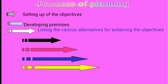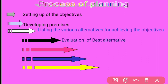After listing the various alternatives, the planning manager starts the fourth step: evaluation of the best alternatives. In this step, the planning manager evaluates the list of alternatives prepared in the third step to find out which one is the best. The manager evaluates each and every alternative, noting down the positive points and negative points of all alternatives.